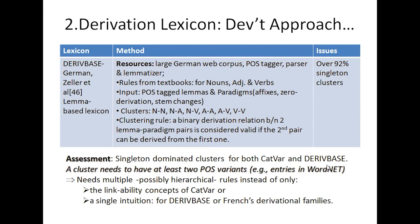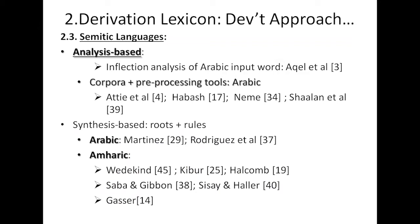The assessment is that both Katawa and DeriBase are dominated by singleton clusters, which needs improvement. At minimum, two part-of-speech variants per cluster are desirable, since derived forms in ordinates typically include at least two, such as verb-adjective or adjective-noun pairs. The proposal is to use multiple hierarchical rules instead of the single linkability concept of Katawa or the single intuition used in DeriBase or French derivational families. In Semitic languages, some approaches for deriving forms from roots and rules already exist.